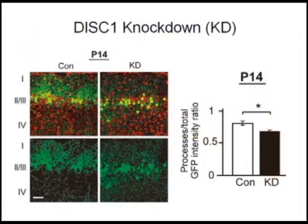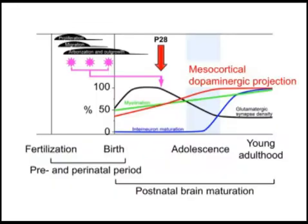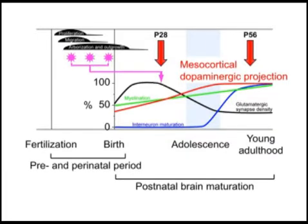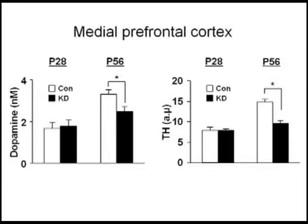At postnatal day 14, we observed disturbance of dendritic arborization in the pyramidal neurons. Nonetheless, two weeks after, at postnatal day 28, no change in the levels of dopamine in the frontal cortex was observed. Very interestingly, robust manifestation of this dopamine defect appears only after puberty, at postnatal day 56.